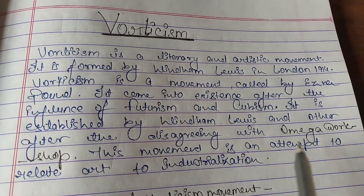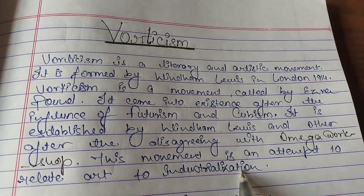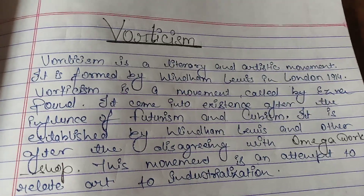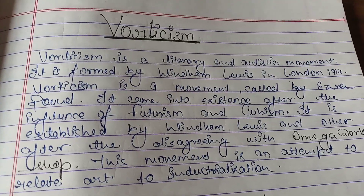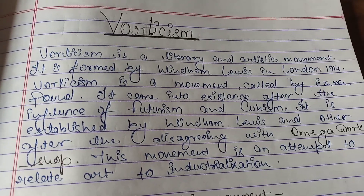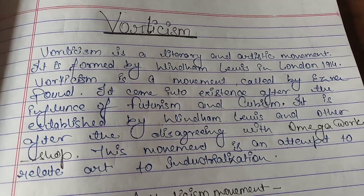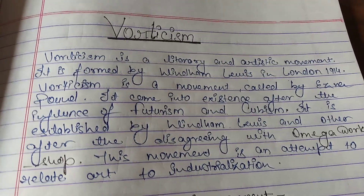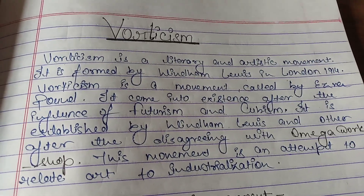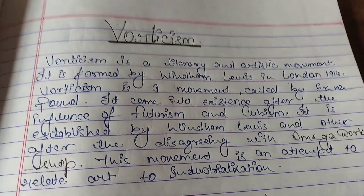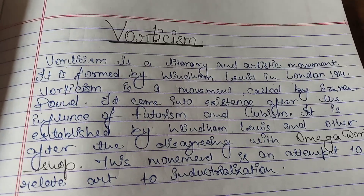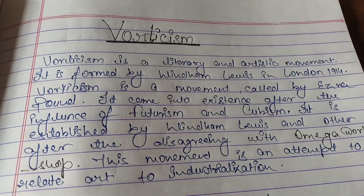This movement is an attempt to relate art to industrialization. In Hindi, vorticism is called 'Brahmitavad.' This movement came in the modern age after World War I — after the influence of World War I, this Vorticism was formed. It was also influenced by Futurism and Cubism.